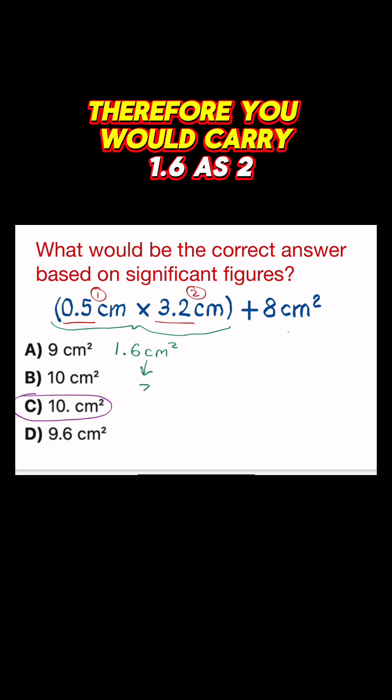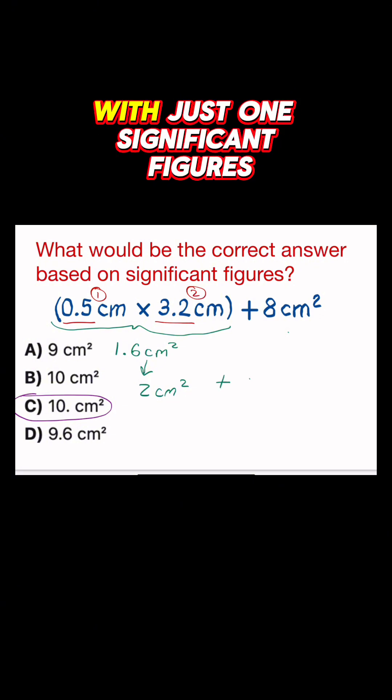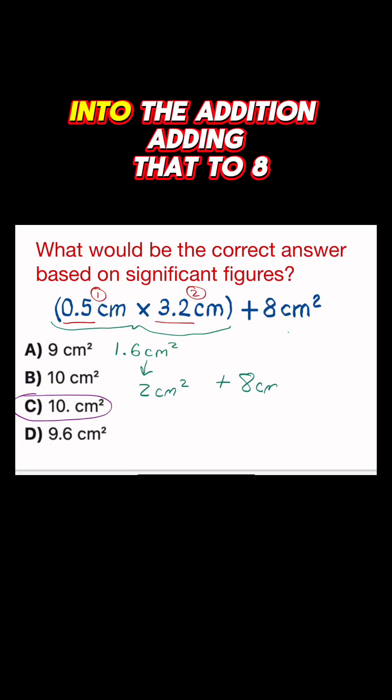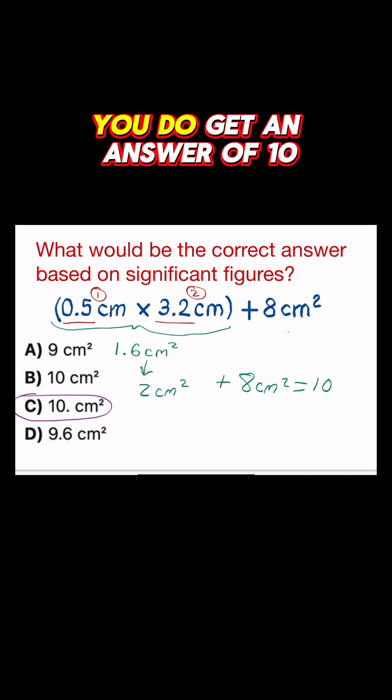Therefore, you would carry 1.6 centimeters squared as 2 centimeters squared with just one significant figure into the addition. Adding that to 8 centimeters squared, you do get an answer of 10 centimeters squared.